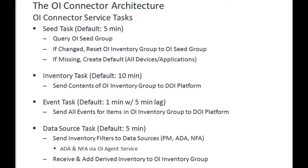The inventory task runs every ten minutes and sends the latest inventory set to the DOI platform. If a new device comes online, it won't be picked up until the next ten-minute interval. There is also an event task that fires every one minute and looks back five minutes, sending all events for items in the inventory group to the platform to allow for any late-breaking events.